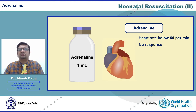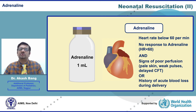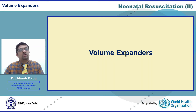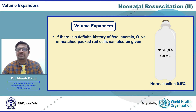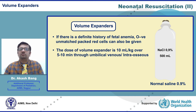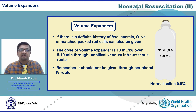If all these are confirmed and heart rate is still below 60 — meaning no response to adrenaline — and additionally there are signs of poor perfusion such as pale skin, weak pulses, delayed capillary filling time, or history of acute blood loss during delivery, then consider volume expanders. The best recommended volume expander is normal saline. If there is a definite history of fetal anemia, O-negative unmatched packed red cells can also be given. The dose is 10 ml/kg over 5 to 10 minutes through umbilical venous or intraosseous route, and it should never be given through a peripheral IV route.